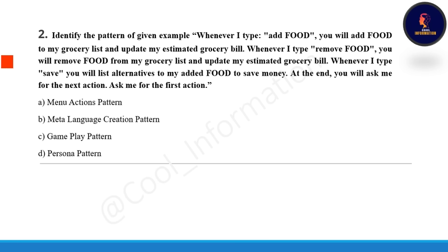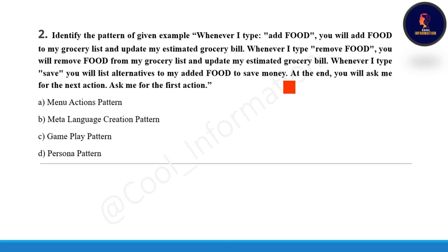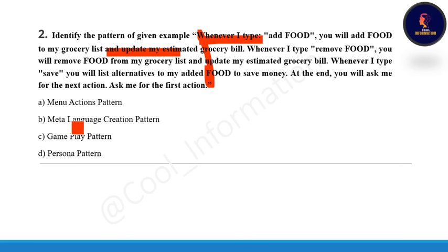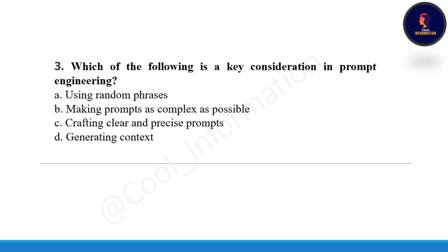Next question: Identify the pattern from the given example. The prompt is: whenever I type 'add food' you will add food to my grocery list and update my estimated grocery bill; whenever I type 'remove food' you will remove food from the list; whenever I type 'save' you will list alternatives to save money; at the end ask me for the next action. The correct option is A — menu action pattern.